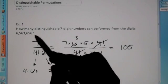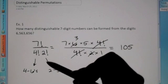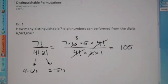So again, seven total digits, so seven factorial on top. There are four sixes, so we put four factorial times two fives, so two factorial here. Again, these are called distinguishable permutations.